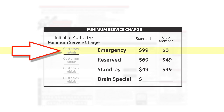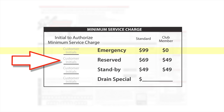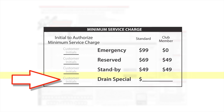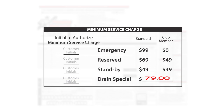Emergency: the customer has a burst pipe with three inches of water in their house. Reserved: a customer has called and made an appointment for service. Standby: if there is any opening in the schedule and a tech can get them in, other than an emergency or reserved scheduling. Drain special: an ad that was run in Valpac for a $79 drain cabling. Most calls will fall under this category with a handwritten amount.